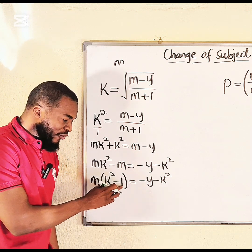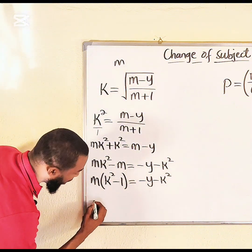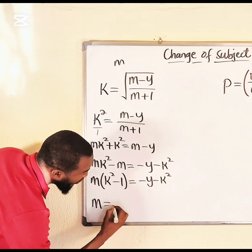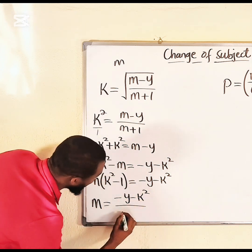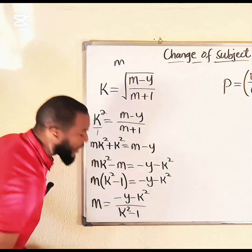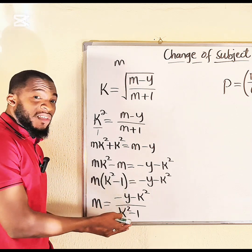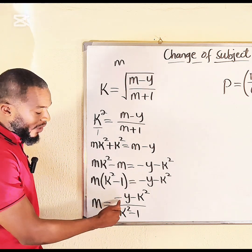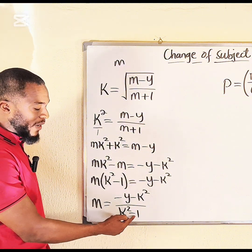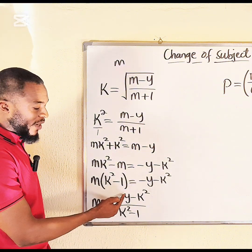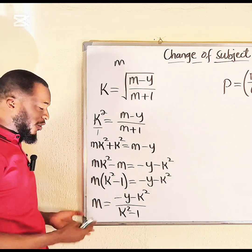Factorise the left side — m is common: m(k² − 1) = −y − k². Then divide both sides by (k² − 1) to isolate m: m = (−y − k²) / (k² − 1). So m is now the subject. Note: you may also factor out −1 from numerator and denominator to write it as (y + k²) / (1 − k²) — either form is acceptable.